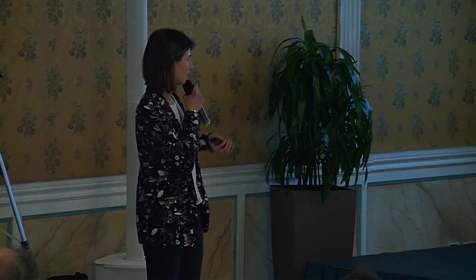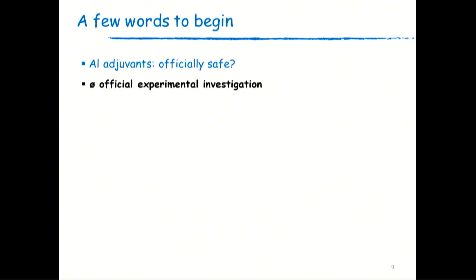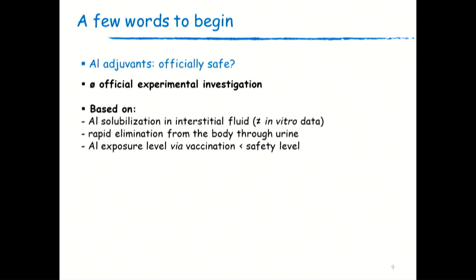The official safety assessment is made in the absence of any official experimental investigation. It is based on three scientific hypotheses. The first is the immediate solubilization into interstitial fluid following injection — we know that's wrong. The second is the rapid elimination from the body through urine — guess what? It's also wrong. The third is that the aluminum exposure level via vaccination is lower than the safety level — it's not entirely wrong, but it really depends on the safety level you define, and I'm going to talk about that.